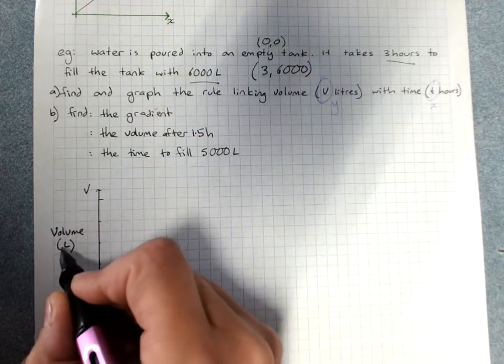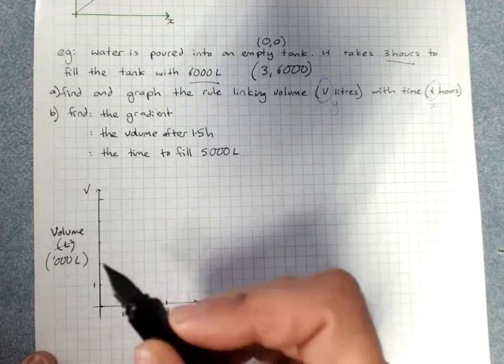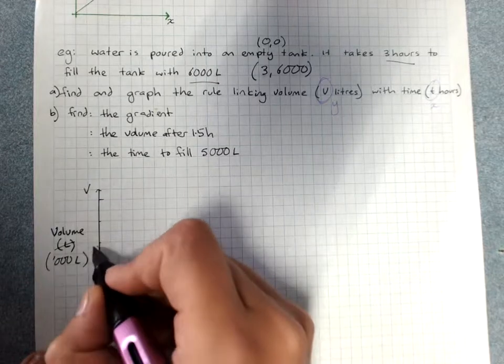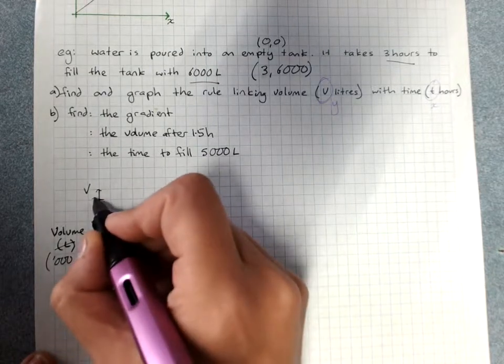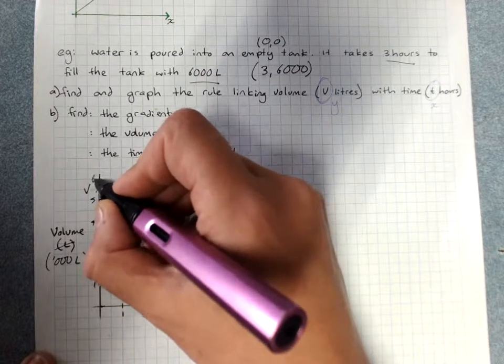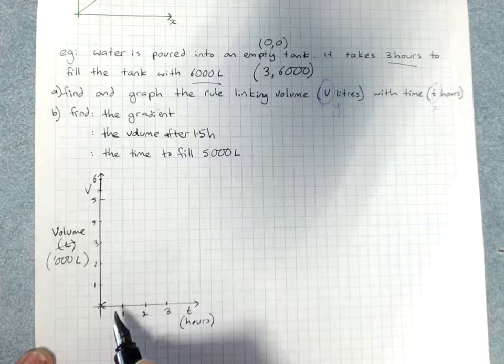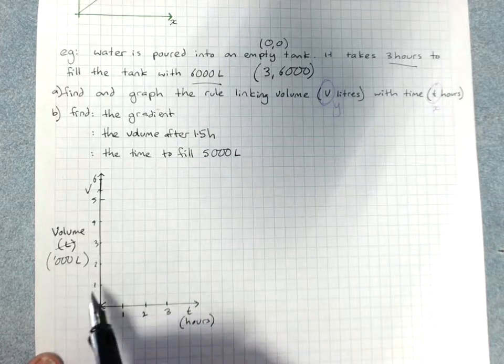Actually, let's do 1,000 liters. 5, and I didn't give it enough space. That's my bad. 6, so we've got a point here at 0, 0.